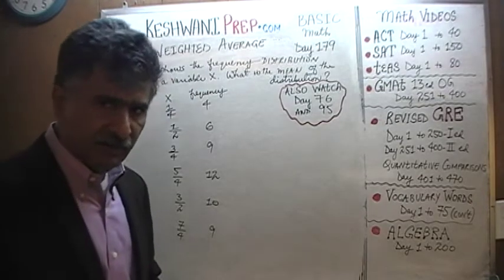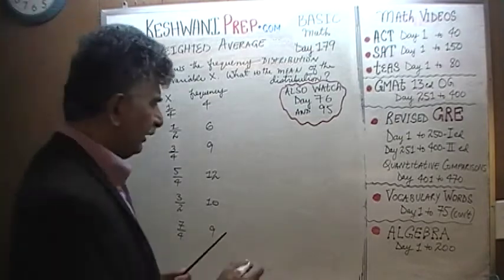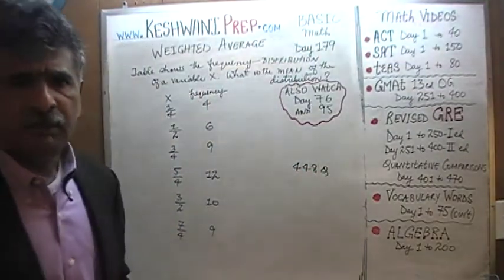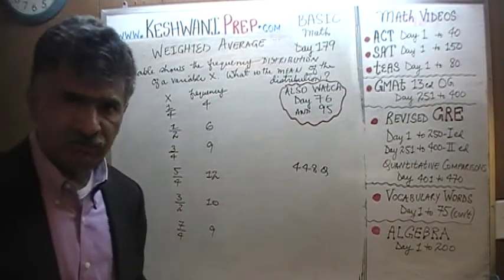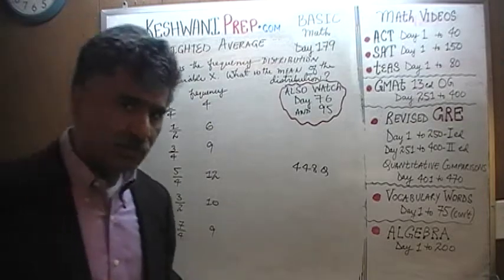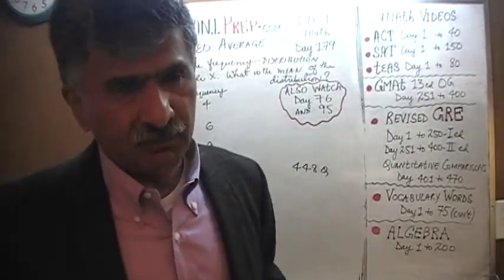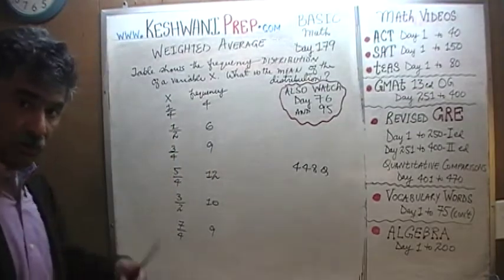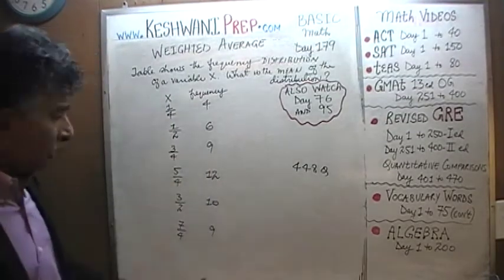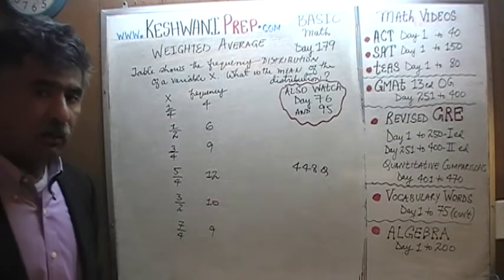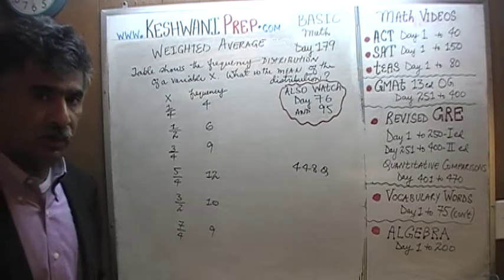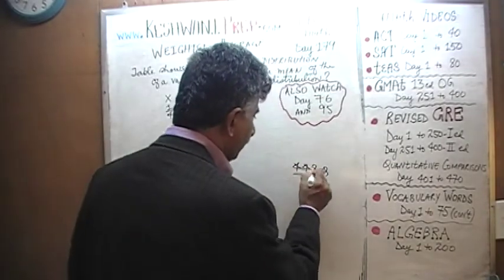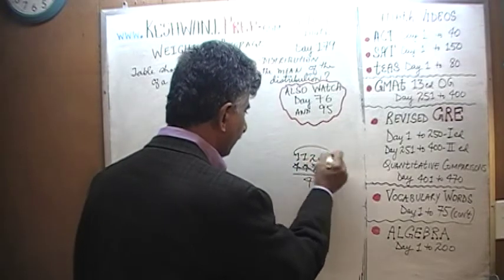At the end, say we end up with 448 quarters — think of this in terms of money, quarters as in 25 cents. Once we have our total quarters, we're going to convert them into dollars by dividing by 4. So if we end up with 448 quarters, dividing by 4 gives us 112 dollars.